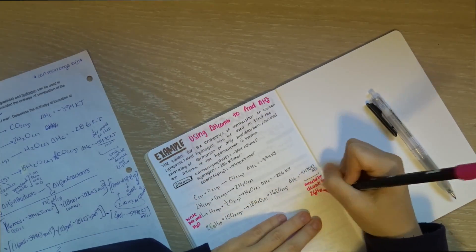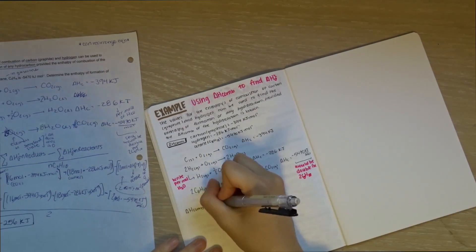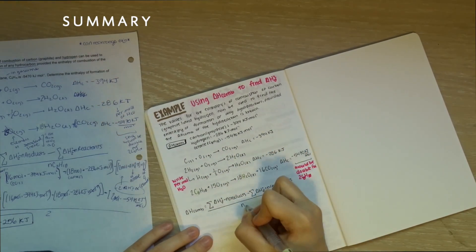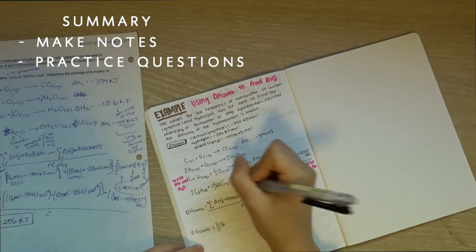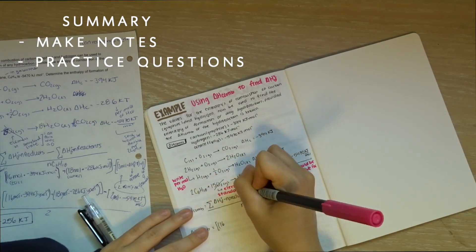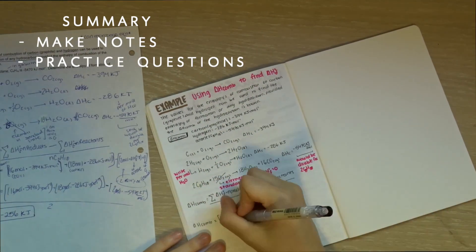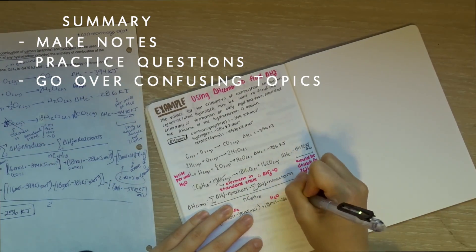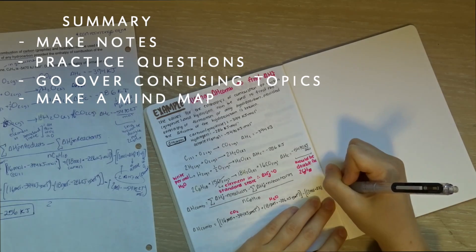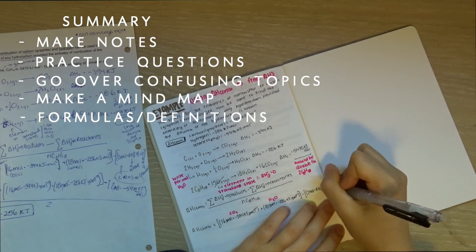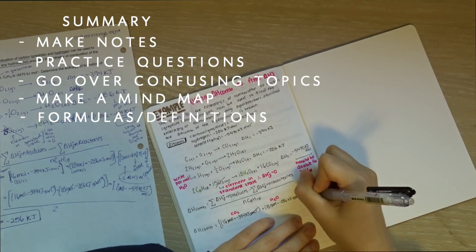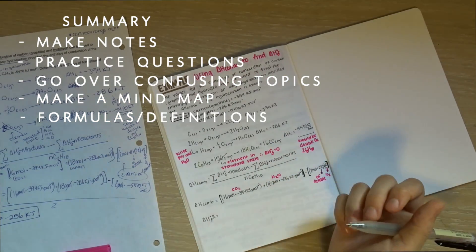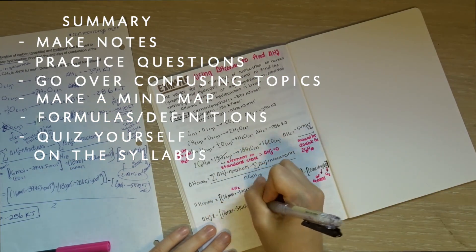To sum this up, it's really important to make notes throughout the unit and do lots of practice questions. The night before a test, go over specific topics you don't understand by making a note in big sharpie. It's also important to make a concise mind map or formulas or definitions list to get it all in one or two pages so you can have a quick overview.